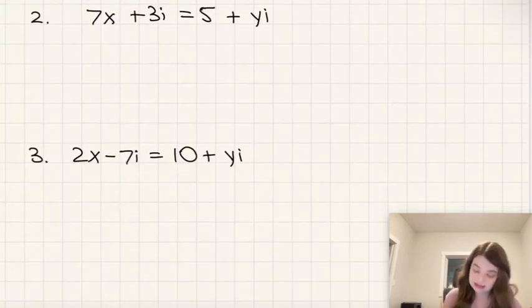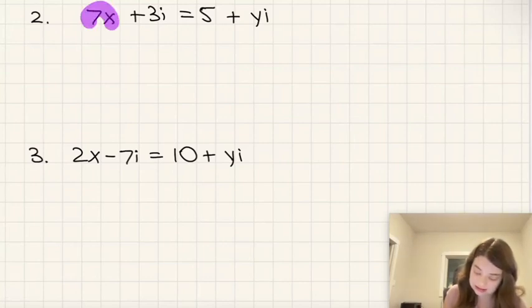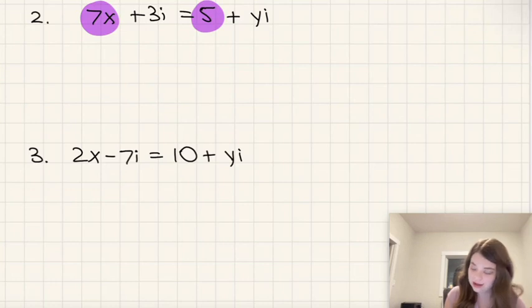So in this case here, our real part of the left is 7x. Our imaginary part is 5—or sorry, our real part of our right is 5. And then our imaginary part of the left is 3i. Our imaginary part of the right is yi.